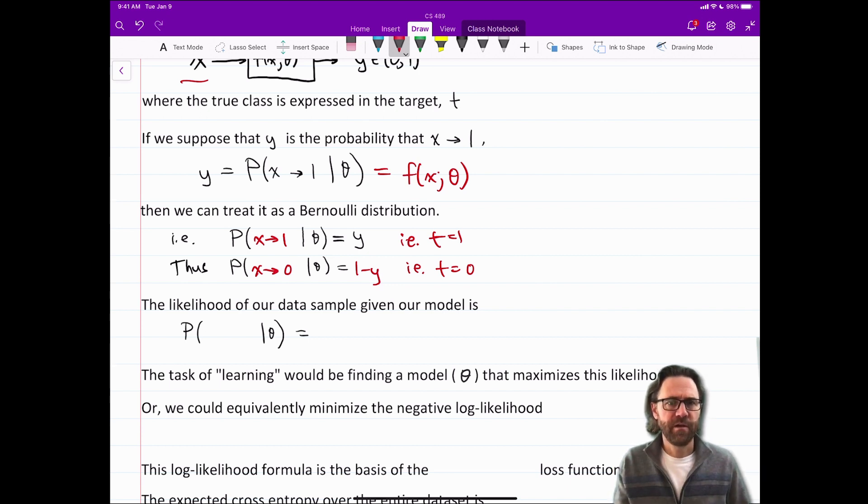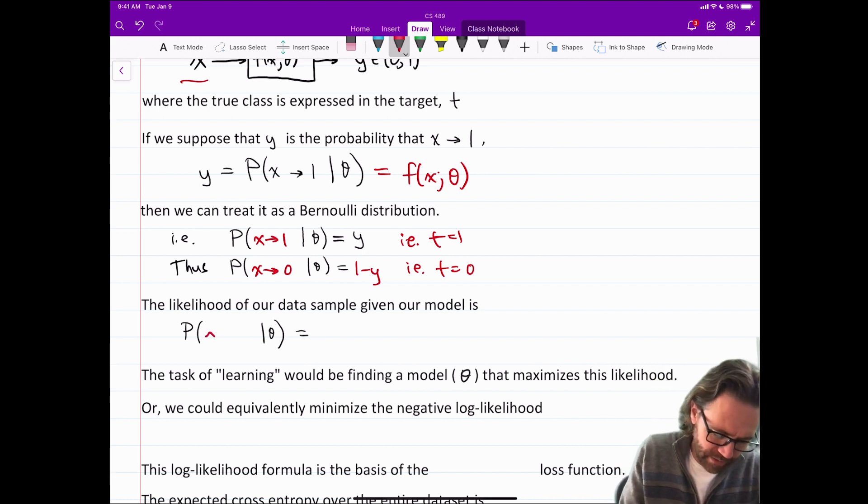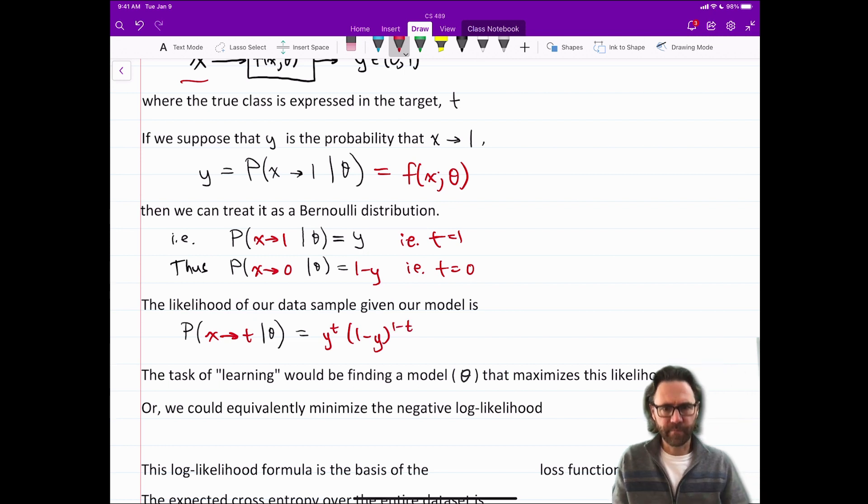We can actually combine those two formulas together. So the likelihood of our data sample given our model is the probability X is of class T is Y to the T times one minus Y to the one minus T. And this works for both classes. So if T equals zero the first part is Y to the zero and that part disappears and you just get one minus Y to the one. If T equals one the second part disappears.